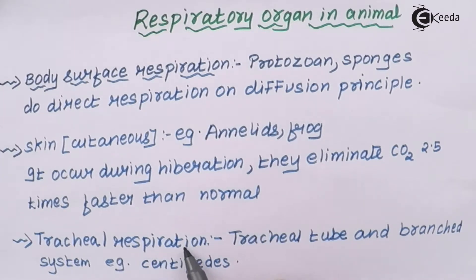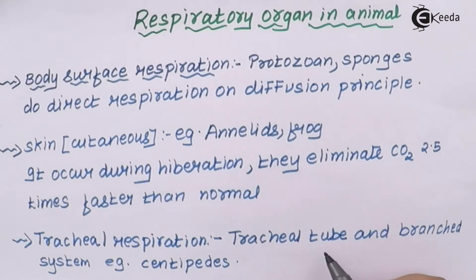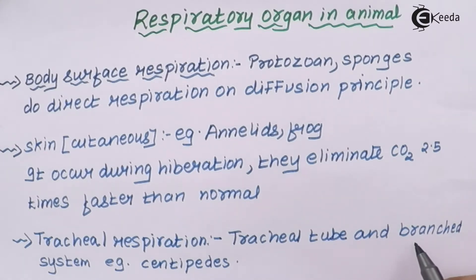Third is tracheal respiration. Tracheal respiration is similar to the trachea or windpipe in human beings. When the windpipe in human beings contracts and relaxes, we respire. Similarly, in organisms like centipedes, a tracheal tube — a longitudinal tube that is hollow with a branched system — helps them to respire. This branched system is not necessarily the same as alveoli or bronchioles, but the branched system helps centipedes to respire.